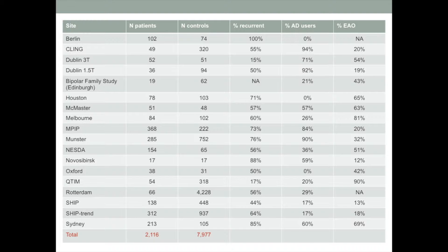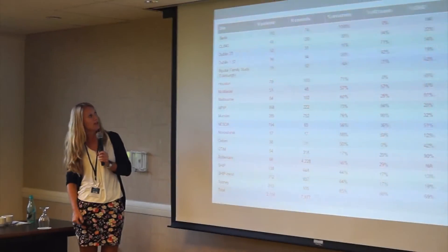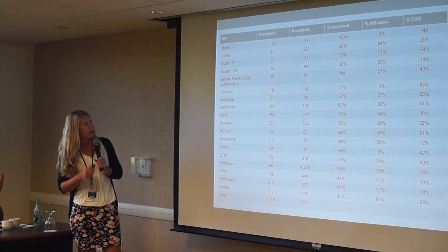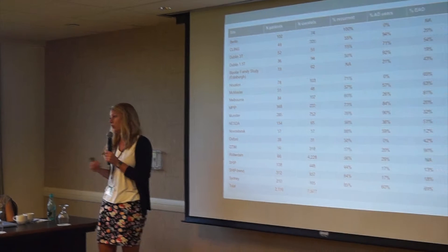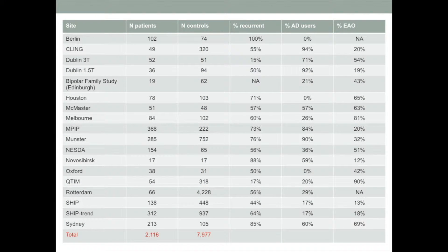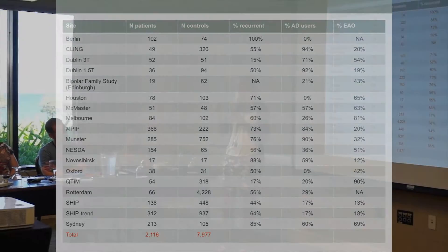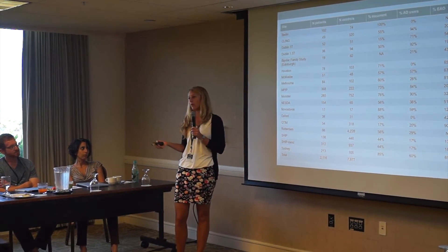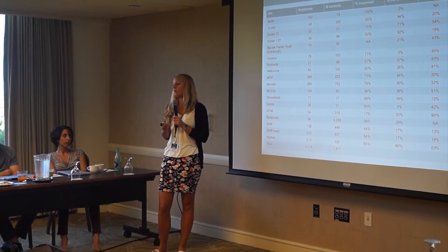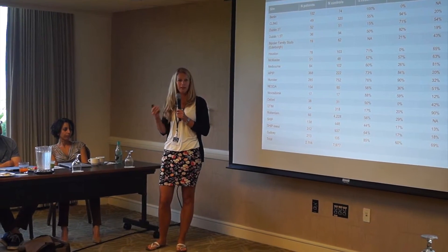Currently we have about 2,100 MDD cases and about 8,000 controls. We have information about the number of patients with a recurrent episode versus first episode, the number of patients currently on antidepressant medication, and age of onset. In some samples we have severity measures, so we also look specifically at associations with clinical characteristics and, as Jessica showed, moderator analyses with methodological differences or mean age.